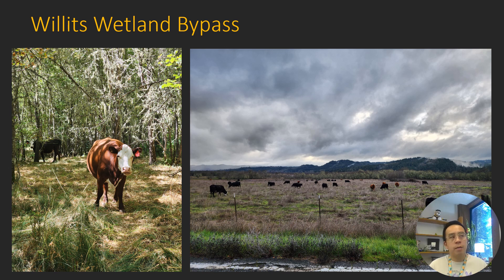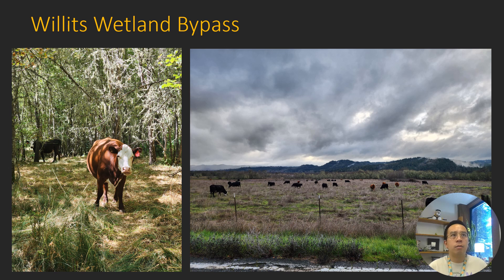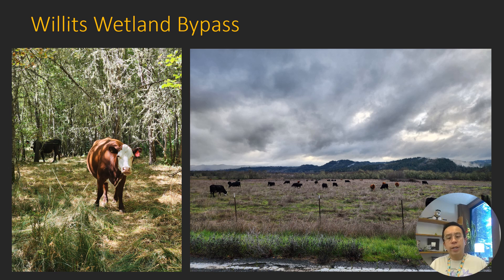At the Willits Wetland Bypass, management goals related to grazing include reducing the cover of very tall plants with continuous cover to reduce fire risk for nearby property owners. It's also important to manage grazing to reduce non-native or undesirable plant species cover, such as Phalaris arundinacea or Phalaris aquatica — reed canary grass and Harding grass. Another reason to manipulate grazing is seasonal suitability, as parts of the year the area is completely inundated with water.